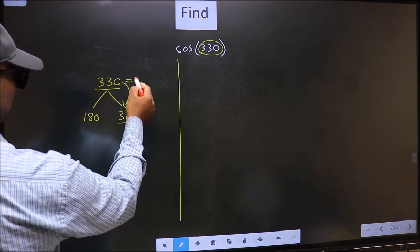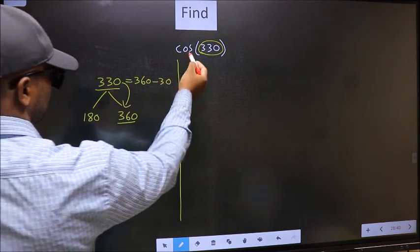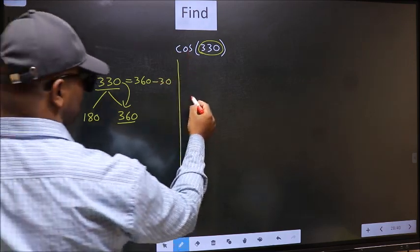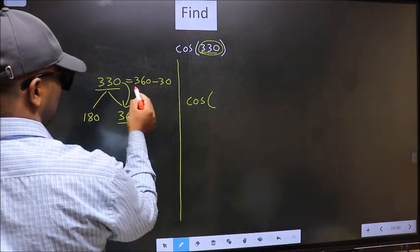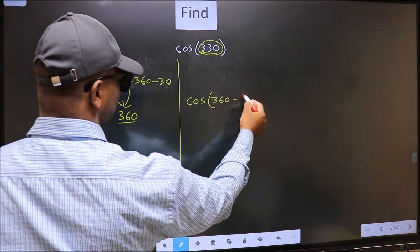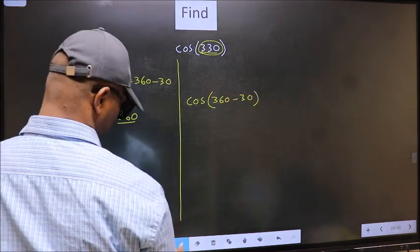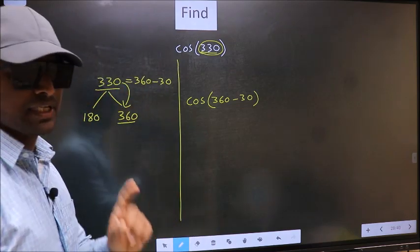So 330 now should be written as 360 minus 30. So this will become cos. In place of this, now we write 360 minus 30. This is your step 1.